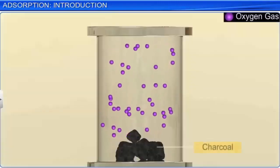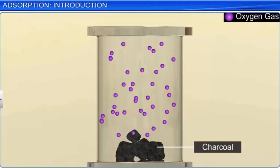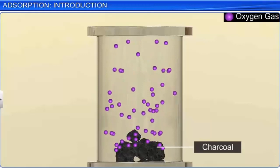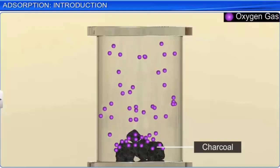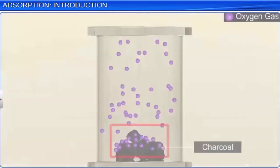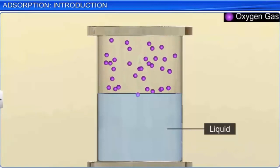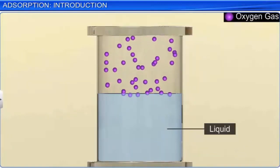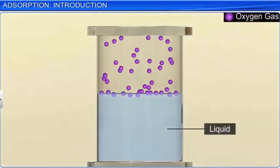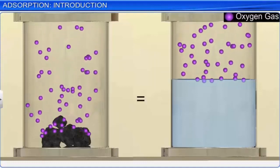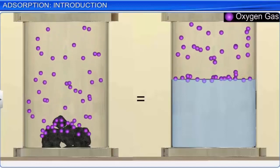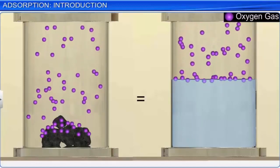If you put solid charcoal in a closed vessel containing oxygen, you observe that oxygen molecules are attracted to the solid surface of charcoal. As a result, the concentration of the gas on the surface of the solid increases. The same reaction occurs if a liquid is put into a closed vessel containing gas — the gas molecules will accumulate on the surface of the liquid. This phenomenon of attracting and retaining molecules of a substance on the surface of a solid or liquid, resulting in a higher concentration of the molecules on the surface, is known as adsorption.